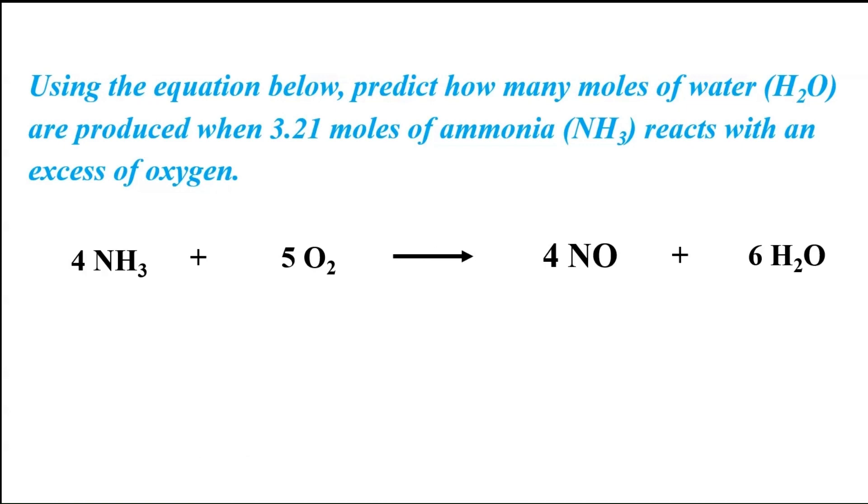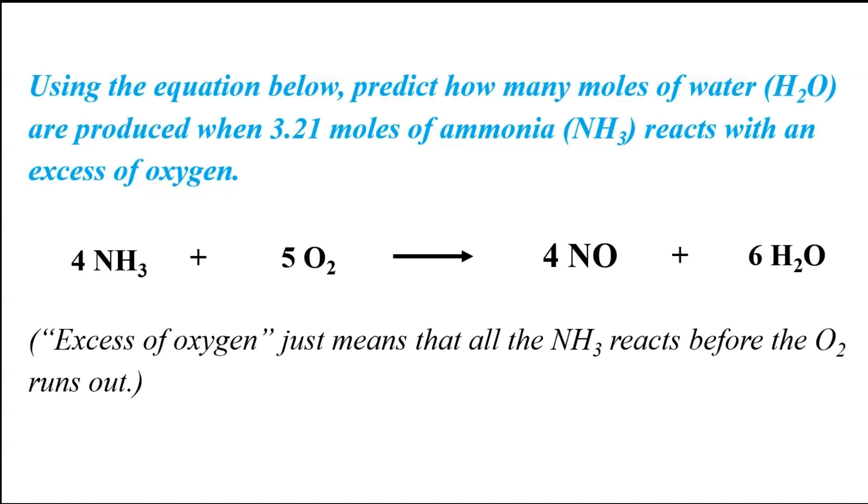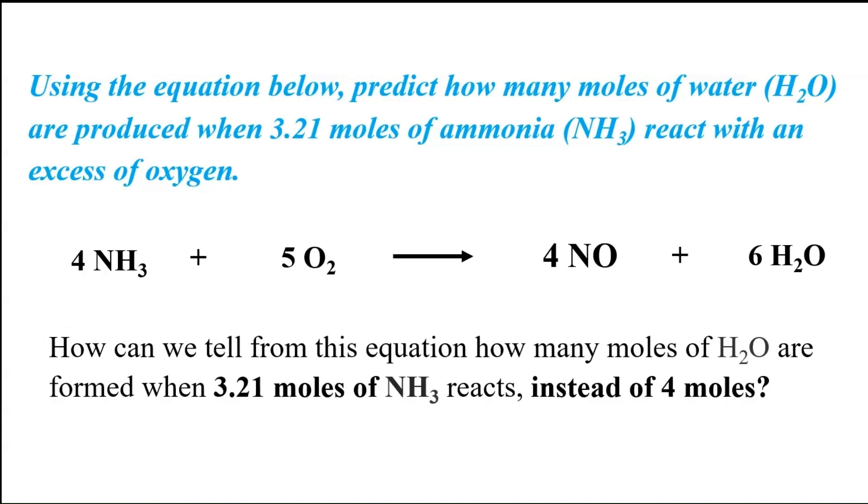Here's an example of one of the simpler, very basic stoichiometry problems. It says using the equation below to predict how many moles of water are produced when 3.21 moles of ammonia reacts with an excess of oxygen. In case you're wondering what excess of oxygen means, it just means that all the NH3, all the ammonia, reacts before the O2 runs out. So the question is asking how can we tell from the equation how many moles of water are formed when 3.21 moles of NH3 reacts instead of four moles?